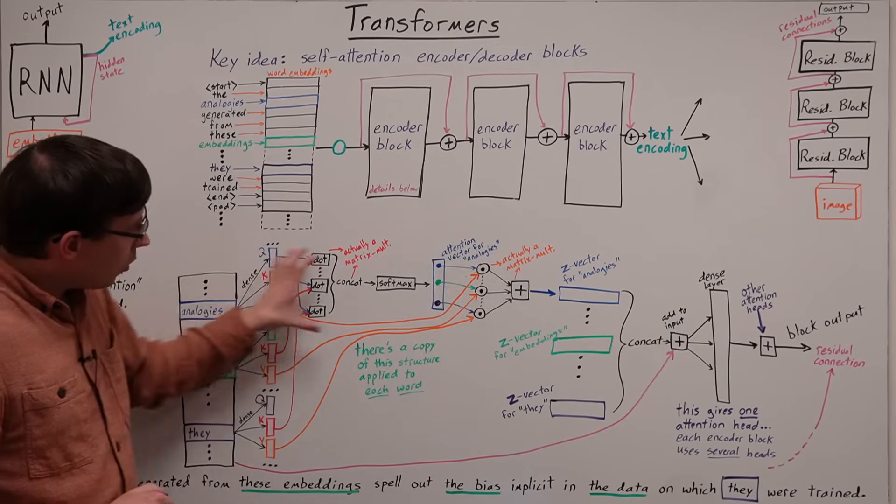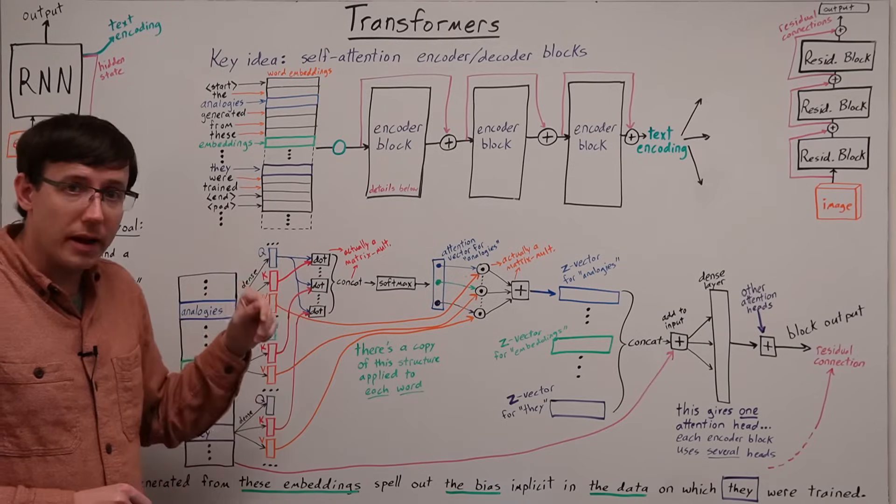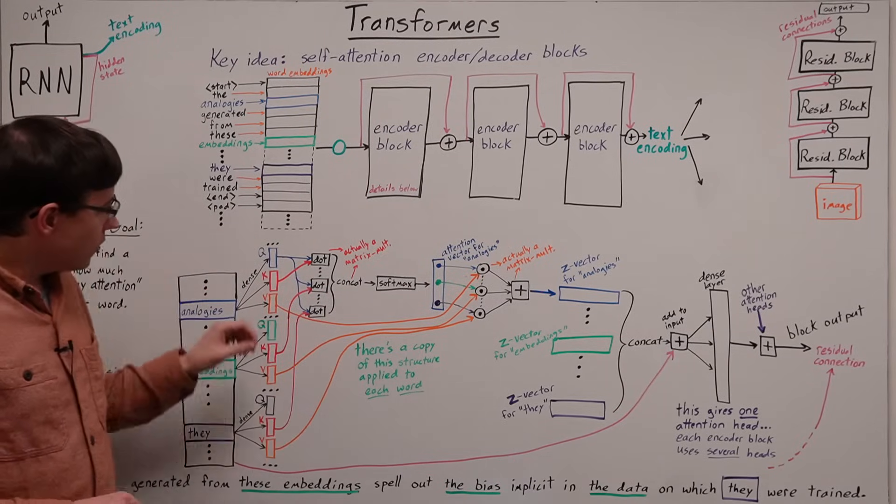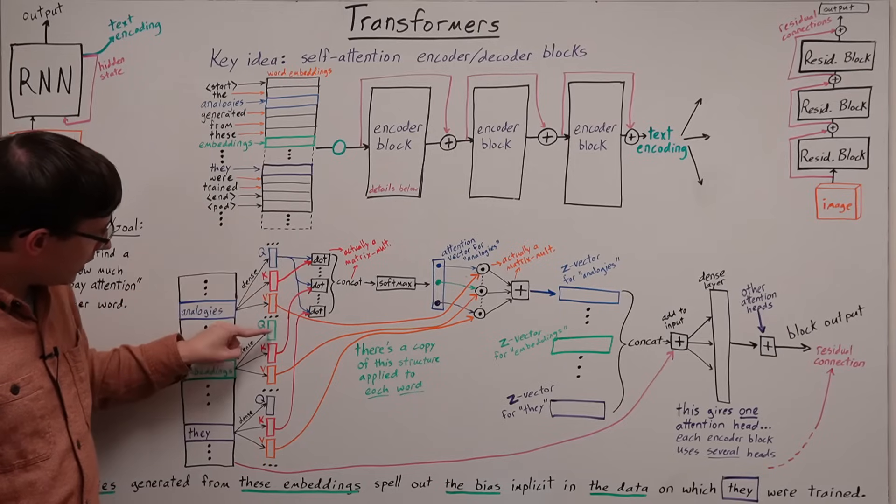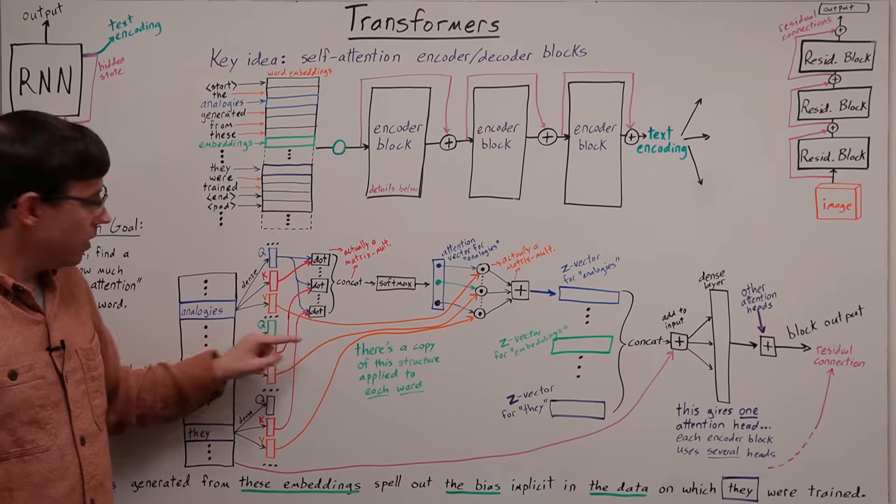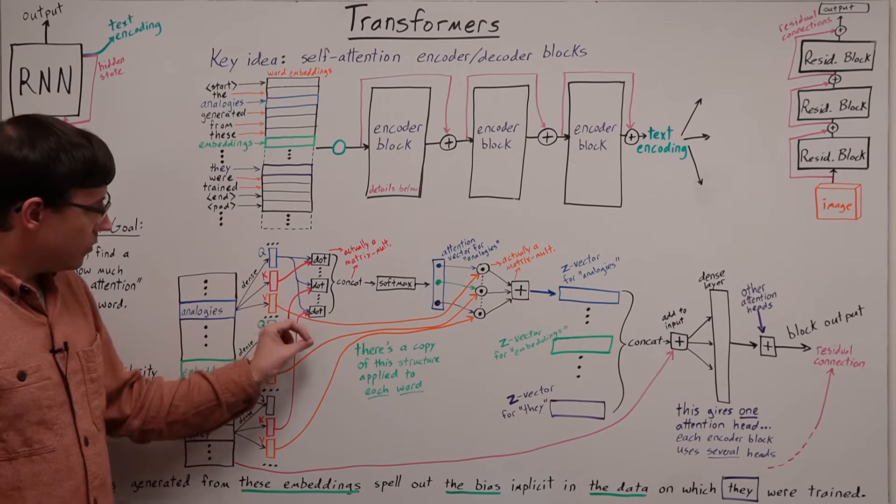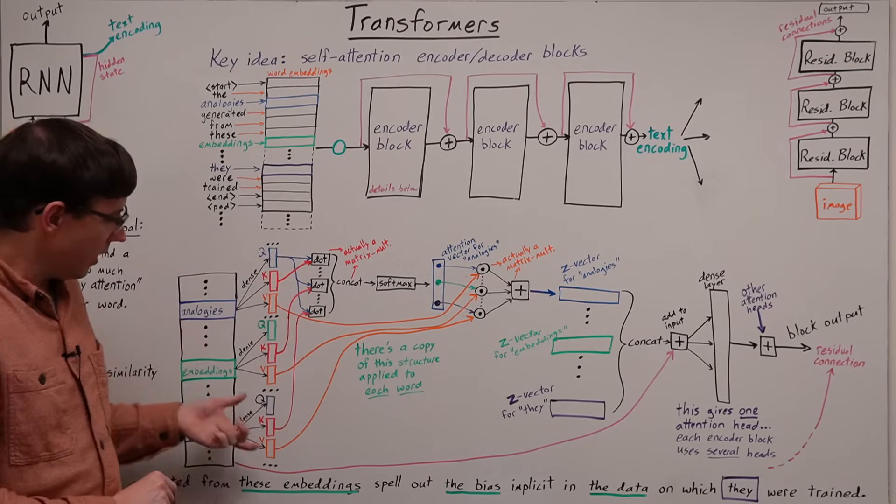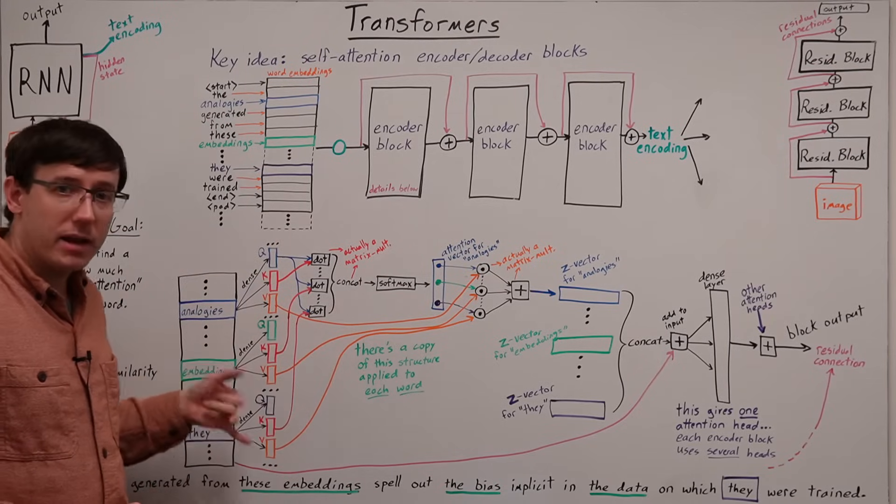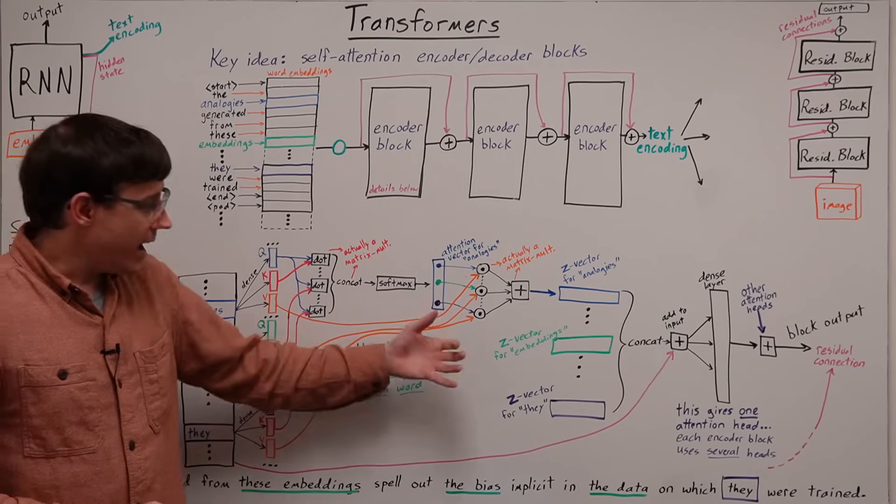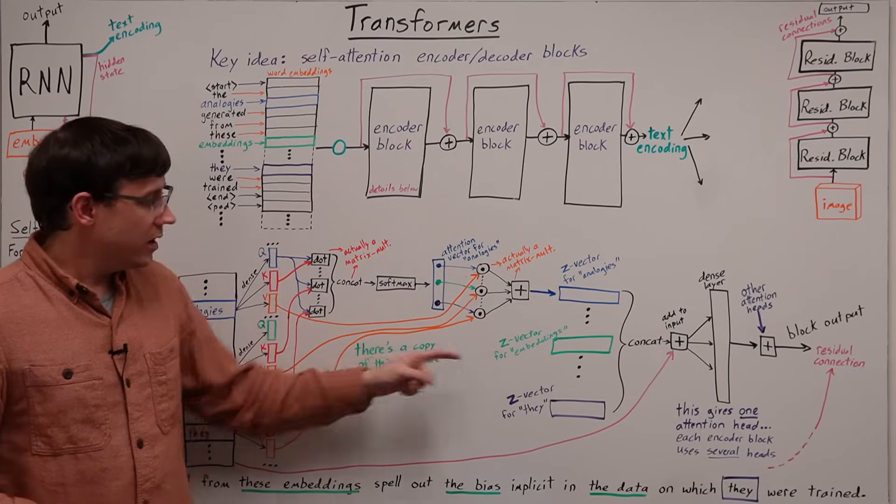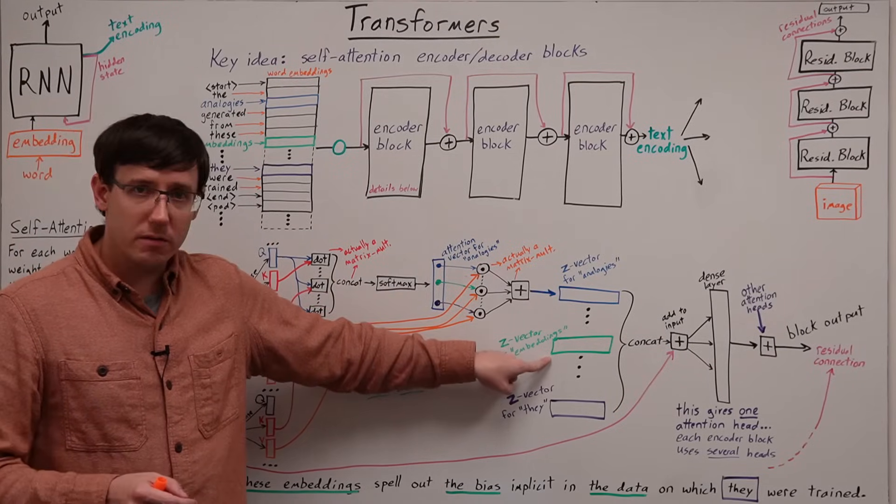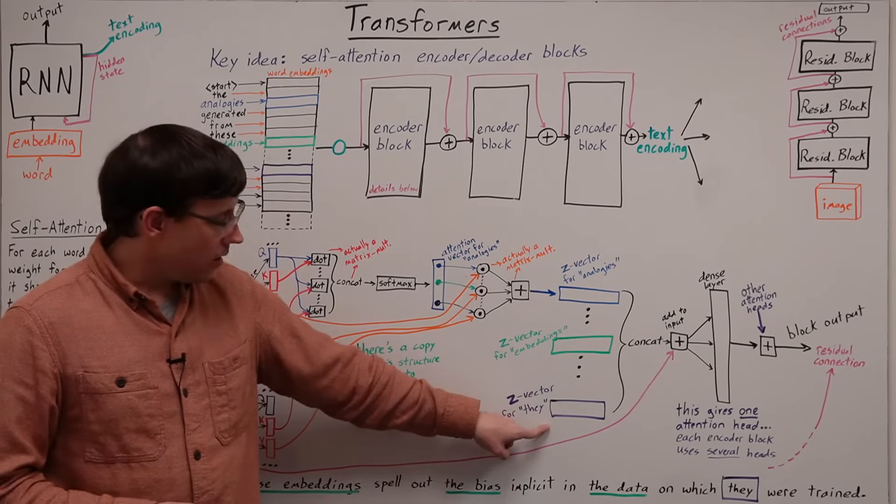And this whole structure is being applied in parallel for each of the words, so we will also use the query vector for embeddings to compute similarities with all of the key vectors, and then take a softmax and apply that to all of the values to get our output vector for embeddings, and an output vector for they,